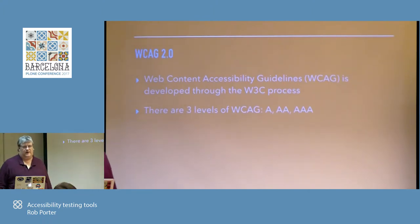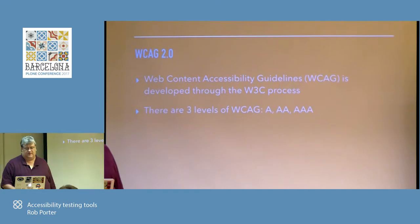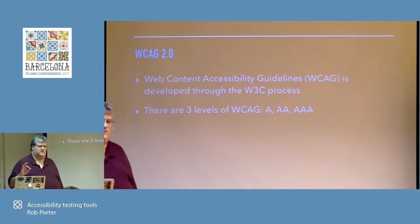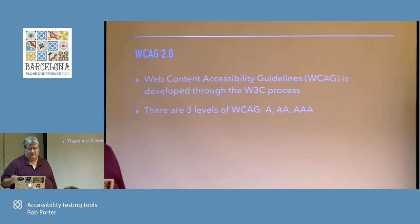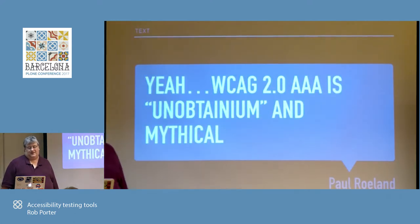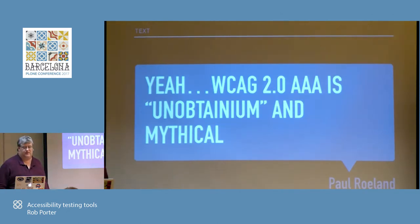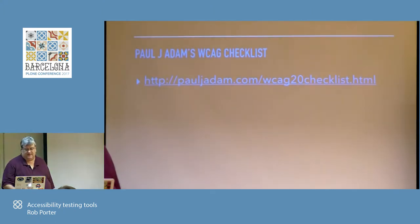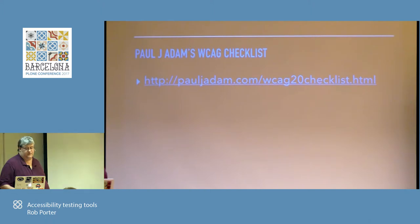WCAG 2.0 — we have something called the 508 Accessibility Standards, making life better for people. For the web, they're WCAG, and there are three levels of 2.0: A, AA, and AAA. If you're going with AAA standards, it has to do everything that AA and single A does. If you do AA, it has to do everything single A does. WCAG 2.0 AAA is essentially unattainable and mythical, so you don't need to go after AAA — it's just impossible. This webpage is a list made by Paul J. Adam, who is a great resource for accessibility.